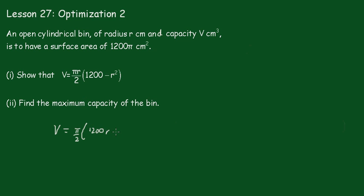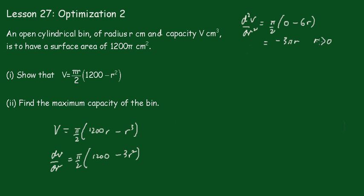That's 1200r minus r cubed. So we get dV/dr is equal to π upon 2 times 1200 minus 3r squared. Now if we take the second derivative, d²V/dr², we get π upon 2 times negative 6r, which is minus 3πr. Now if r is greater than 0, which it has to be because it's a radius, then this will always be negative, so that means a maximum will have to occur.